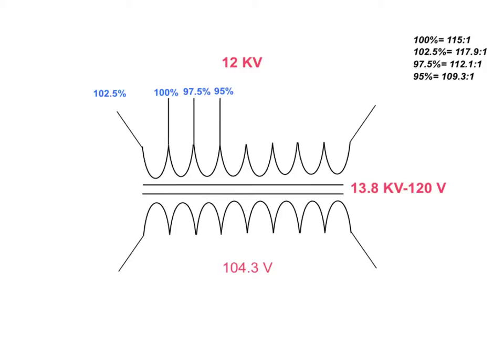We know that we can't go up because we've just discussed how we need to take our turns ratios and decrease them to increase our volts per turn. So we're going to use 97.5% or 95%. Let's try the 97.5% tap. I'm going to take 12 kV on my primary and divide it by 112.1 and see what we get. And we get 107 volts. So we're getting closer.